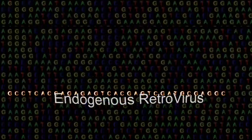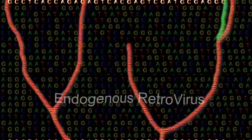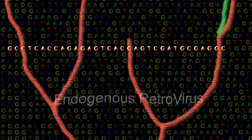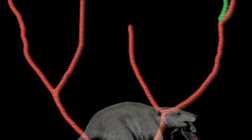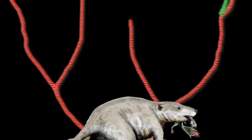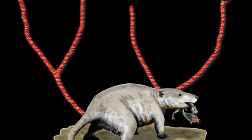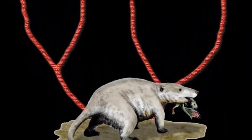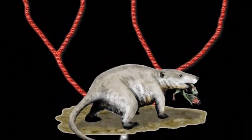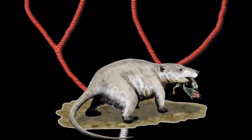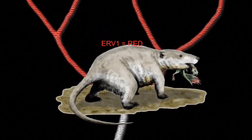Let's examine how endogenous retroviruses, or ERVs, would behave within a model of evolution by common descent. Suppose an ancient creature, let's call it Primus Mammalius, is the common ancestor of all modern mammals and is infected by a retrovirus that becomes endogenous. All of the Primus descendants would be expected to carry the same ERV, let's call it ERV-1, in the same chromosomal location.